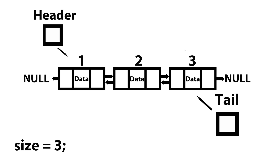So let's take a look at what will happen in case one. Case one is going to be checking to see whether or not we're getting a valid position. So for example, if the position being passed in is less than one, because one is our starting point — if I pass in zero, for instance — we are just going to ignore that. That's an invalid position.